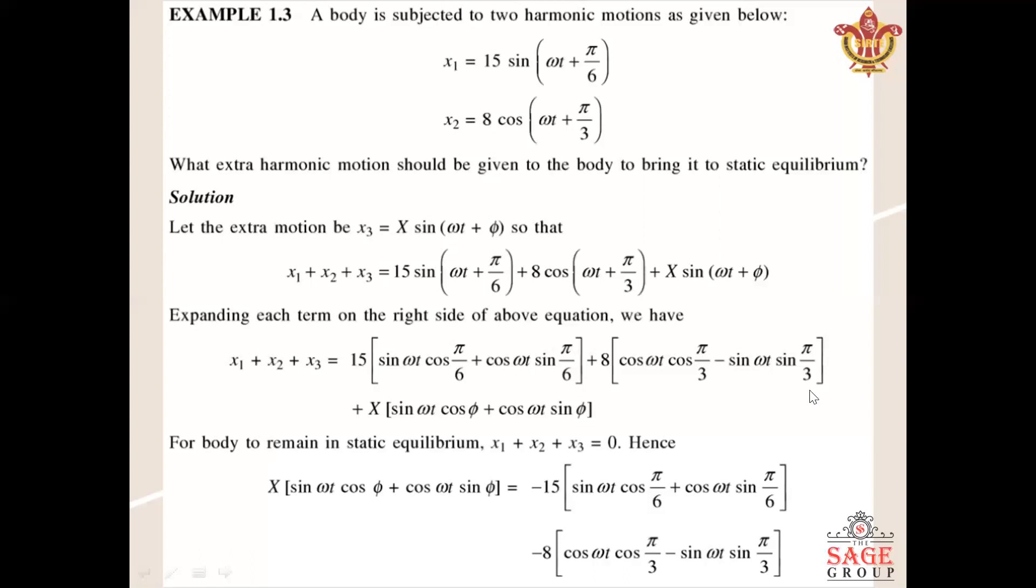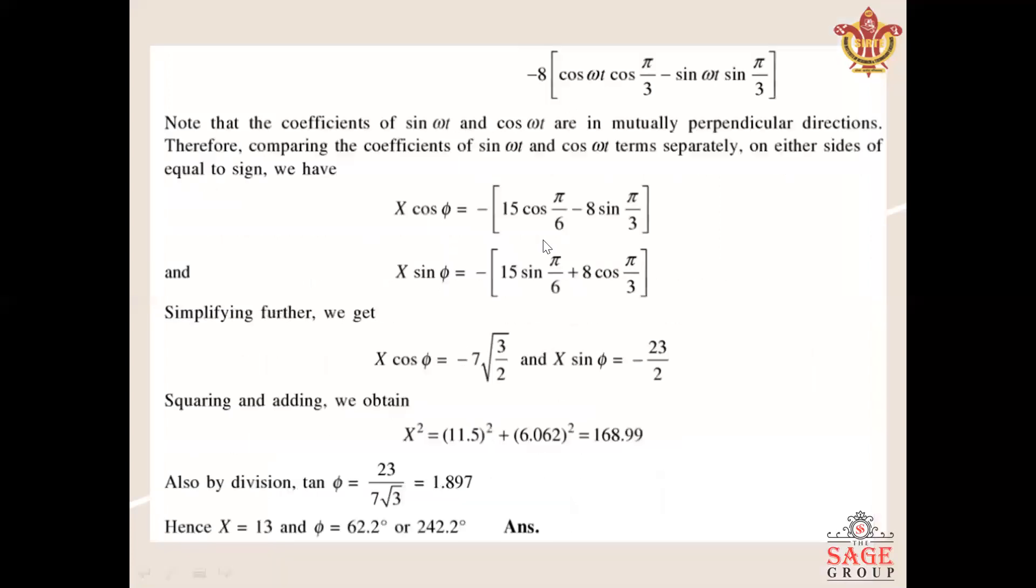So we get X cos φ = -15 cos(π/6) - 8 sin(π/3), as well as X sin φ = -15 sin(π/6) + 8 cos(π/3). While simplifying these terms, we get X cos φ = -√3/2 and X sin φ = -23/2.